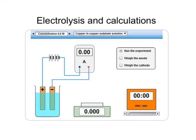This tutorial covers the electrolysis of copper sulphate and also of some binary compounds, and looks at how moles can be used in calculations to work out what mass of a product might be deposited at one of the electrodes.